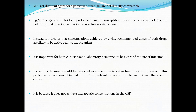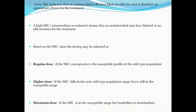It is important for clinicians and laboratory personnel to be aware of the site of infection. For example, in the case of a Staph aureus infection reported as susceptible to ceftriaxone in vitro, if the isolate was obtained from CSF, it would not be an optimal therapeutic choice because ceftriaxone does not achieve therapeutic concentration in the CSF. A low MIC indicates the antimicrobial will most likely be effective. A high MIC indicates it is not appropriate. Based on MIC value, dosing may be adjusted as regular dosing, higher dose if MIC falls in the non-wild population range but still in the susceptible range, or maximum dose if MIC is susceptible but borderline or intermediate.